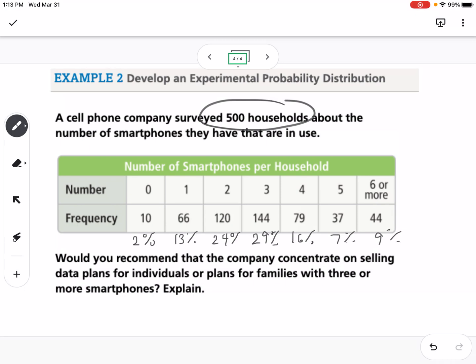We're looking at three and up. So if we focus on those percentages, 29, 16, 7, and 9, and we add them all up, we get 61%. So that means that 61% of the households surveyed have three or more phones. That would mean that we should probably recommend that they are going to focus on selling data plans for families with three or more smartphones, because more people fall in that category than fall in individual plans. Individual plans would be 13%.